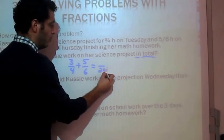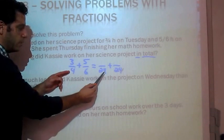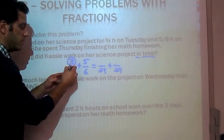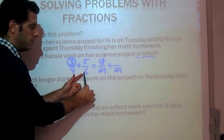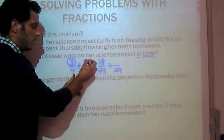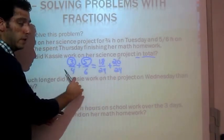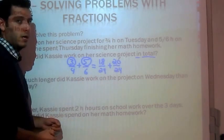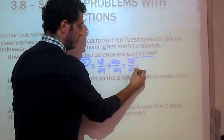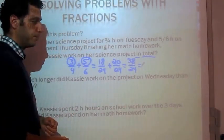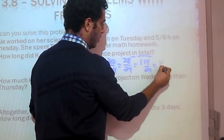4 times 6 is 24, so the common denominator is 24. We multiply the numerator 3 by 6 to get 18, and multiply 5 by 4 to get 20. So 3 quarters equals 18 twenty-fourths and 5 sixths equals 20 twenty-fourths — these are equivalent fractions. Now we can add: 18 over 24 plus 20 over 24 equals 38 over 24, which simplifies to 1 and 14 over 24, or 1 and 7 twelfths.